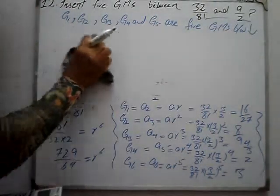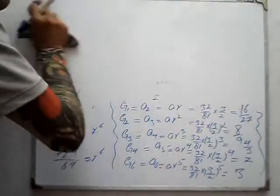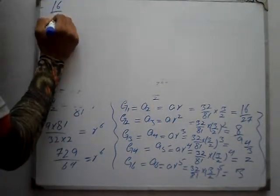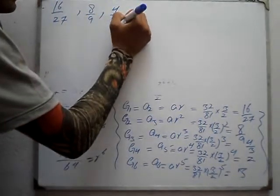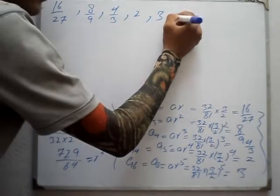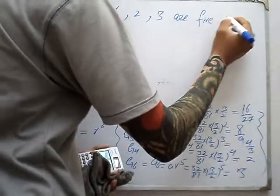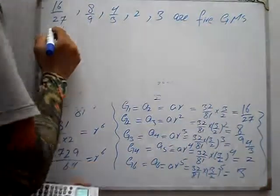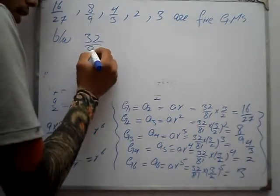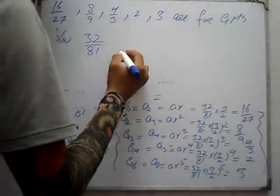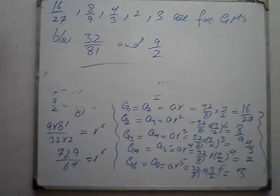So after solving, the 5 geometric means between 32 over 81 and 9 over 2 are: G1 = 16 over 27, G2 = 8 over 9, G3 = 4 over 3, G4 = 2, and G5 = 3 over 2. The solution is now complete.